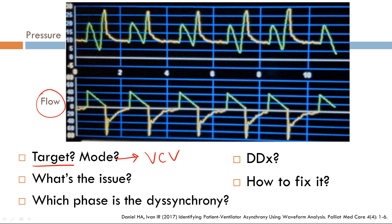There's only one type of target dyssynchrony, and that's flow starvation. The patient is flow starved — they're inspiring excessively during the breath because the flow they are receiving is not enough. For example, this patient's flow is set to 40, and it's not enough for the patient.